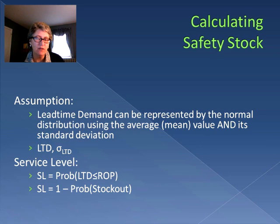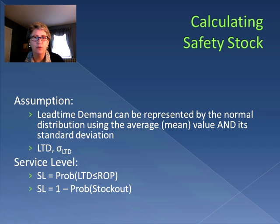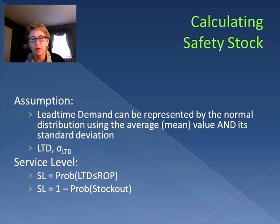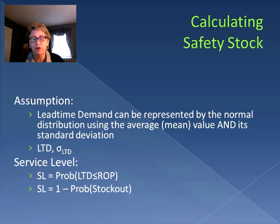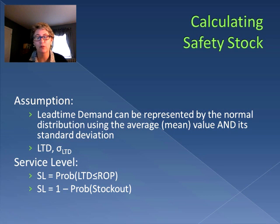When we calculate safety stock, we make the assumption that lead time demand can be represented by the normal distribution, characterized by its mean and standard deviation. So we get two terms: the lead time demand, which is the average amount we're going to use, and the standard deviation of the lead time demand, which represents the variation in demand. Service level is the probability that the amount we use is less than or equal to the amount we have on hand — our reorder point — which also means service level equals one minus the probability of a stockout.